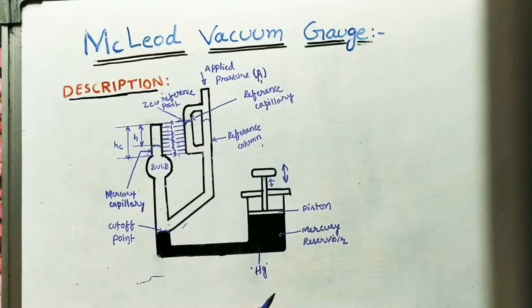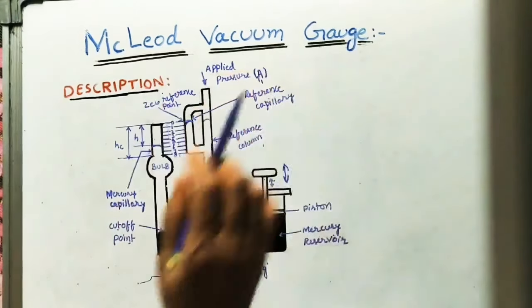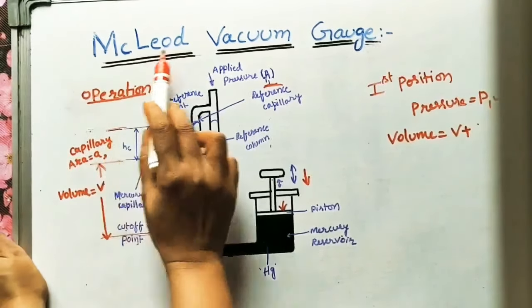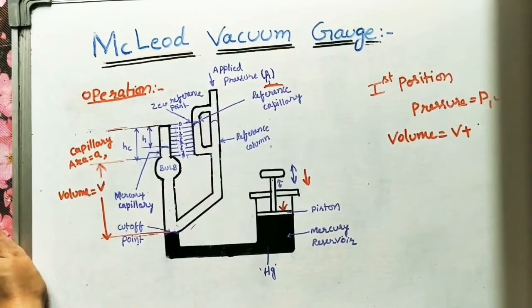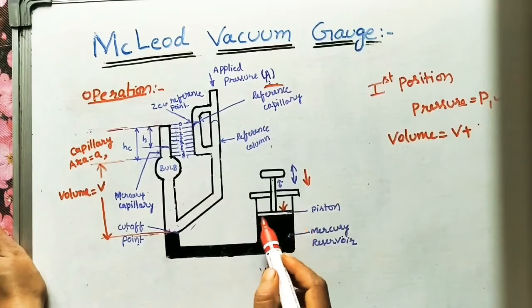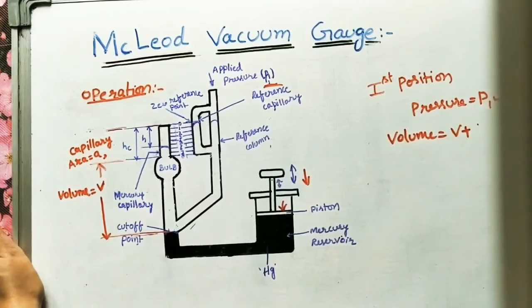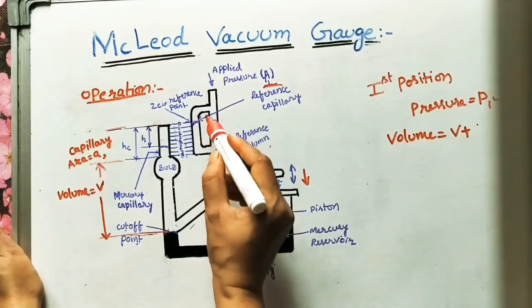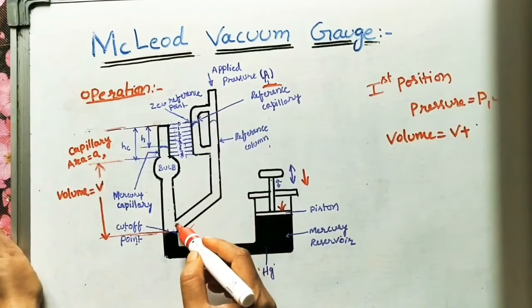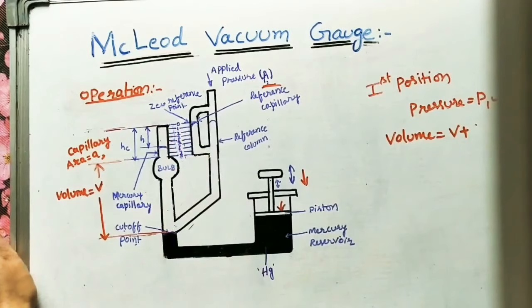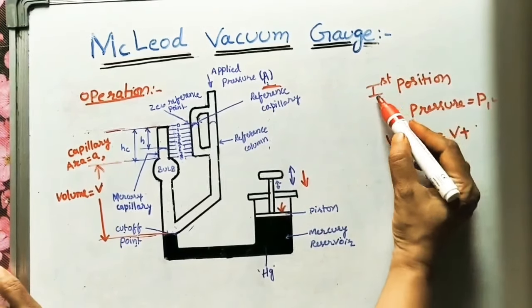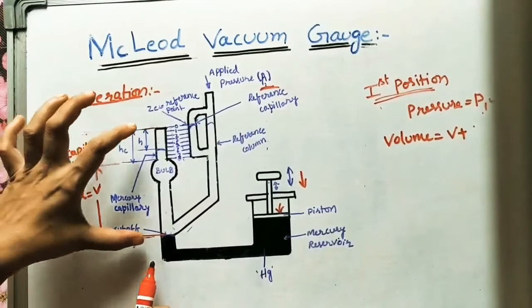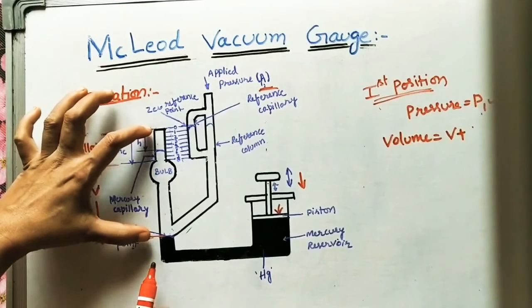These are the main parts of the McLeod vacuum gauge. Now let us see the operation. The initial position of mercury, because of the piston arrangement, is up to the cutoff point. I apply some gas at pressure P1; this gas will come through the passage and enter the column. In the first position, the pressure is P1 and the volume the gas occupies is the first volume V1.